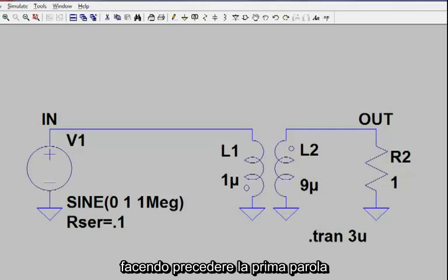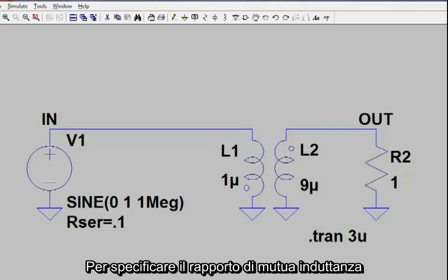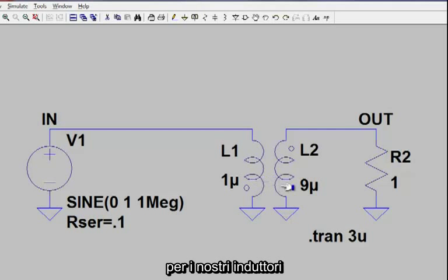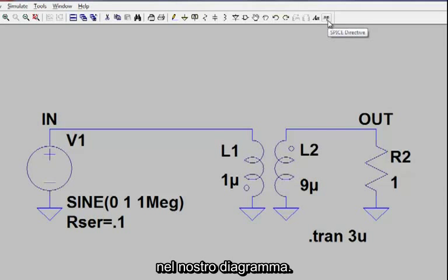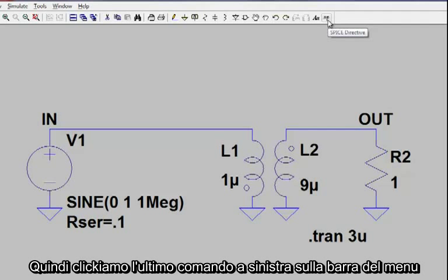Mutual inductance is designated in SPICE by beginning the first word of a new line with the letter K. To specify the mutual inductance ratio for the inductors we have defined, we need to insert a SPICE directive into our diagram. So let's go and click the .op command on the menu.